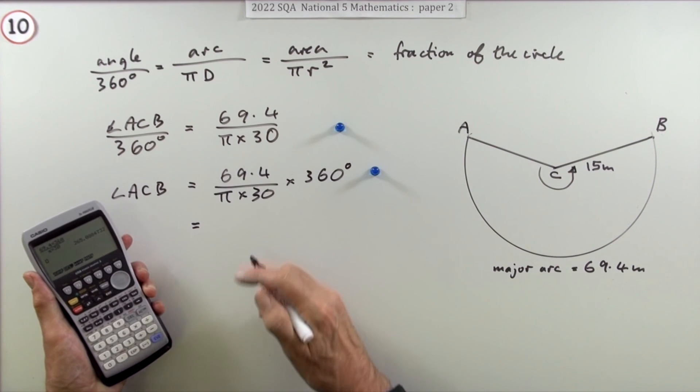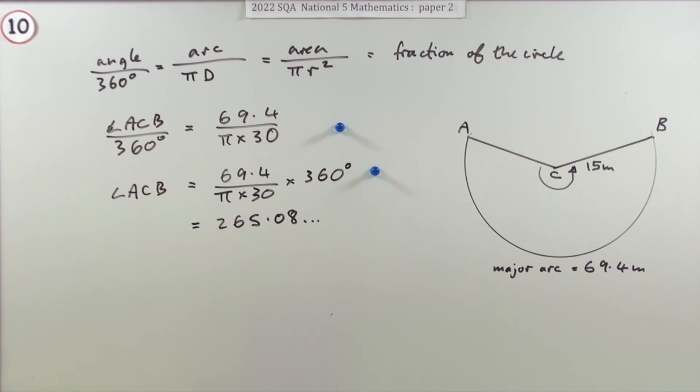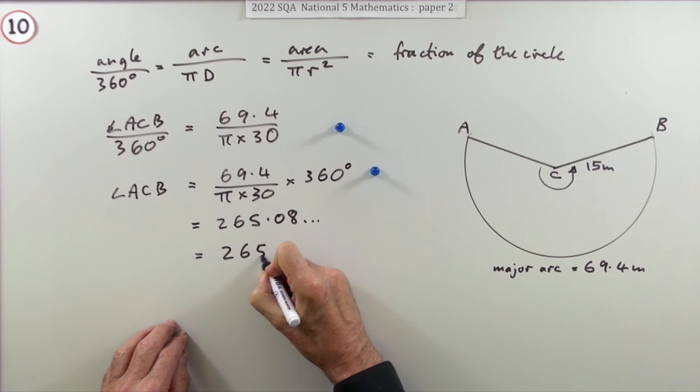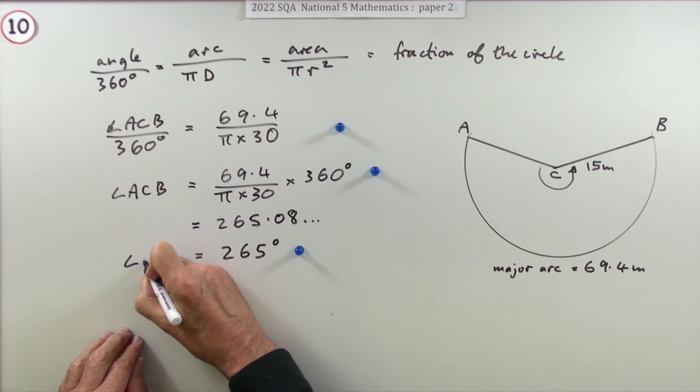Pressing the buttons gives you 265.08 and so on. And then appropriately, I would say, just take it to the nearest degree: 265 degrees for the final mark for the reflex angle ACB.